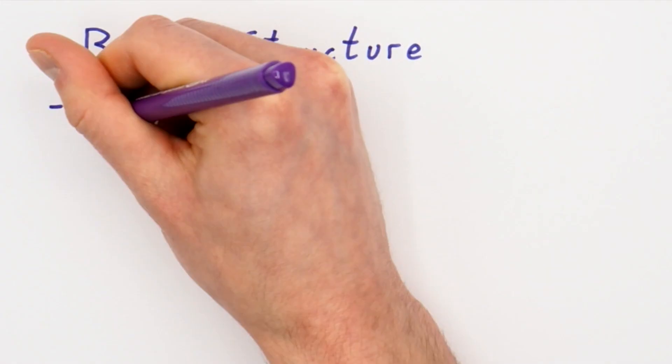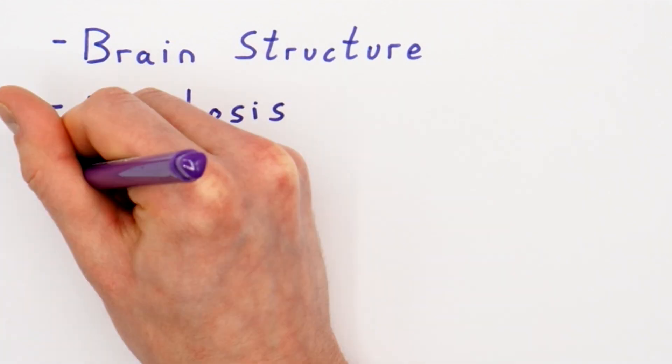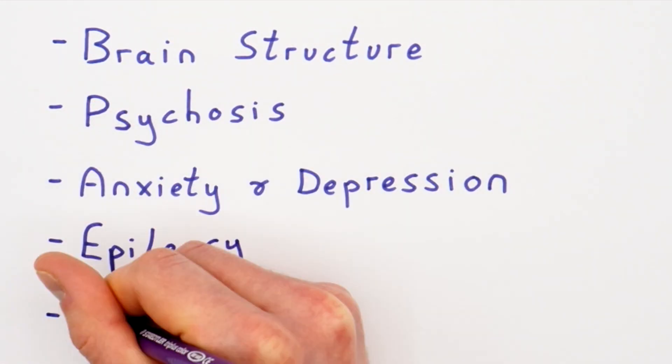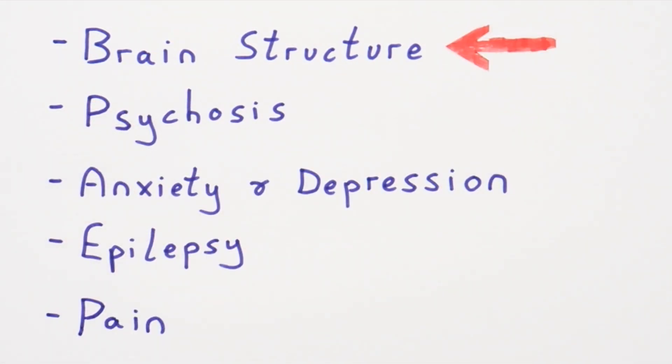All papers discussed are linked below. Also, to be blunt, the smoking of anything has a host of very dangerous and well-documented side effects I won't be covering here. I'm going to explain the studies researching the effects of weed on five things: brain structure, psychosis, anxiety and depression, epilepsy, and pain.